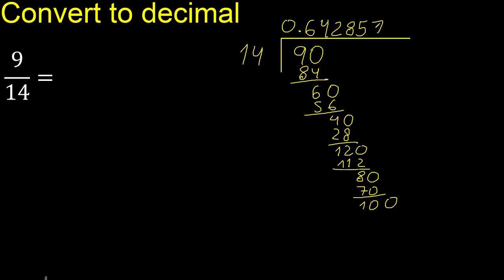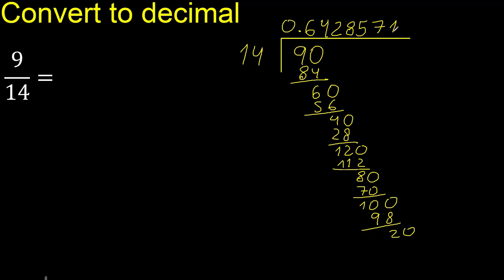We multiply by 7 and subtract, then complete. We now have 20. 14 multiplied by 1 is 14. We subtract and complete.